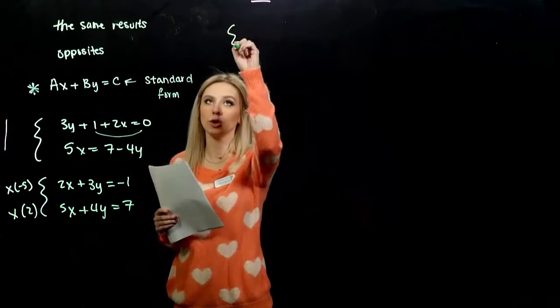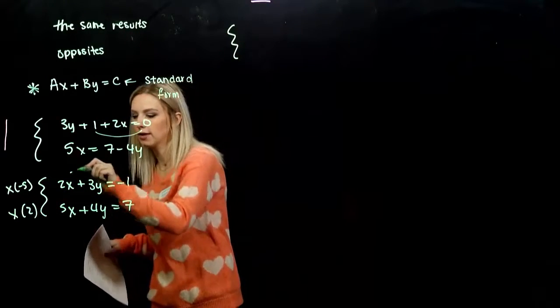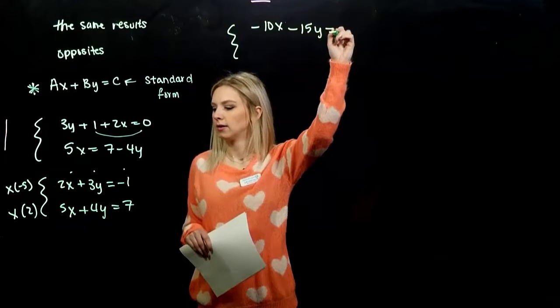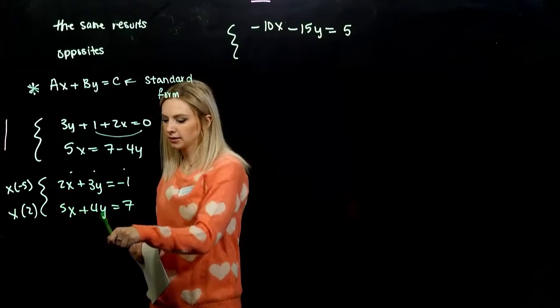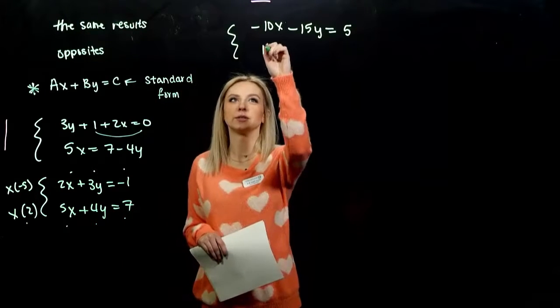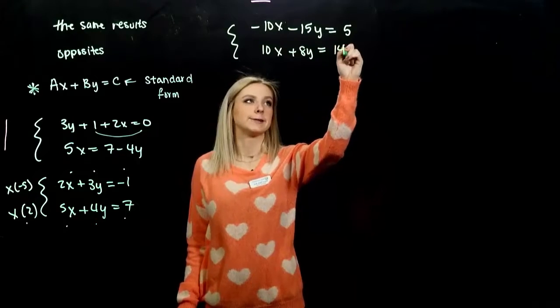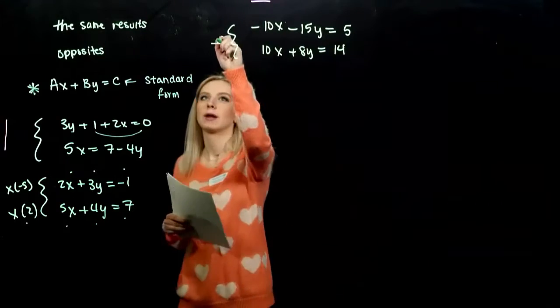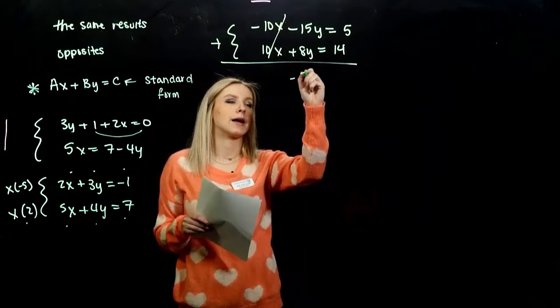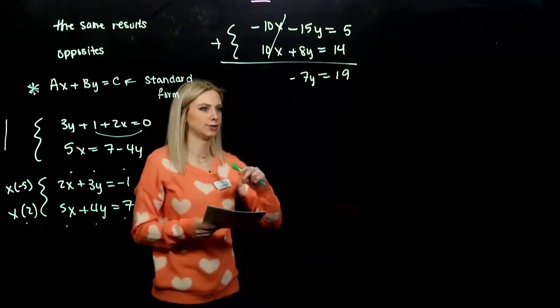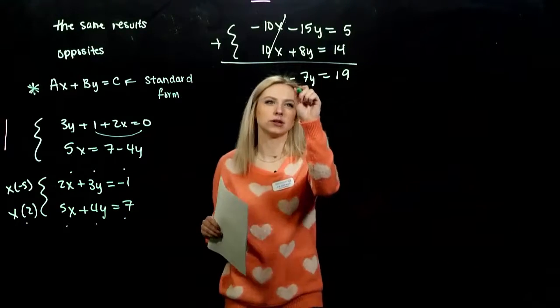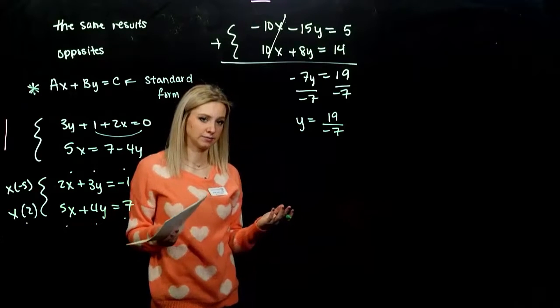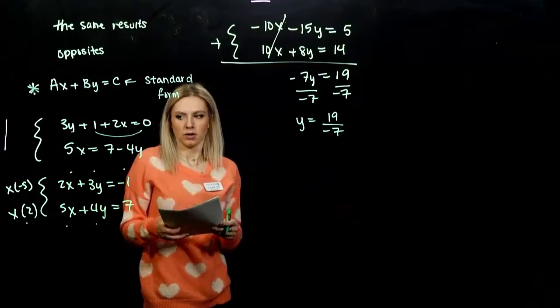So, when we do that, we get another equivalent system, because whatever we do to one side, we have to do to the other. So, every single term by negative 5, what are we looking at? Negative 10X minus 15Y equals positive 5, every single term, and every single term down here by 2. So, 10X plus 8Y equals 14. So, all three of these systems are equivalent, and they just take different forms. Now, when we add those together, what happens? The X's are going to be gone. How many factors of Y do we have? And it's equal to 19 when we add those two together. So, in this case, when we do the division to get Y on its own, does it simplify nicely? 19 over negative 7. If you don't get a whole number out, that's fine.